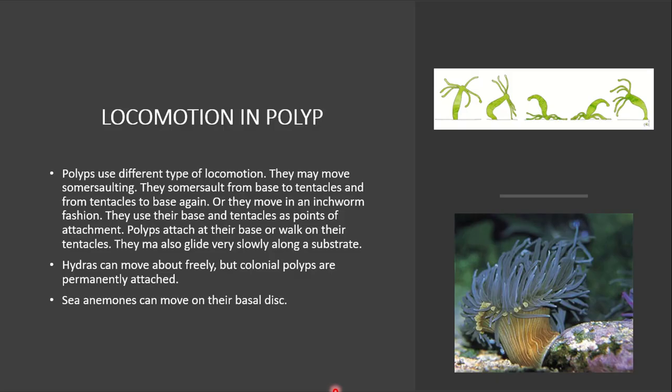So now, locomotion. As you all know, we discussed in our last video that the Cylentrata or Nidaria have two morphological forms. One is polyp and the other is medusa. Both modes of locomotion are different.